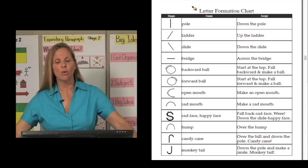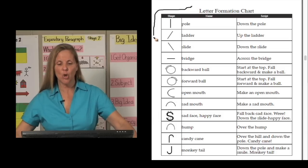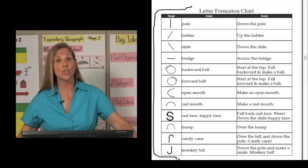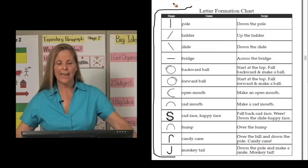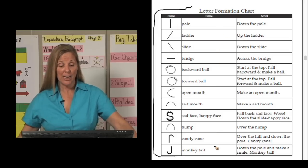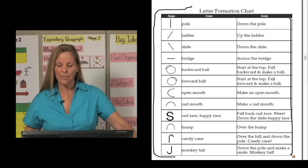The first page is the letter formation chart that displays all 12 shapes that the students will need to learn. Notice I have a visual of the shapes, also the name of the shape, and then the last column here is the script that you use in which they're going to say this script as they make the shape.